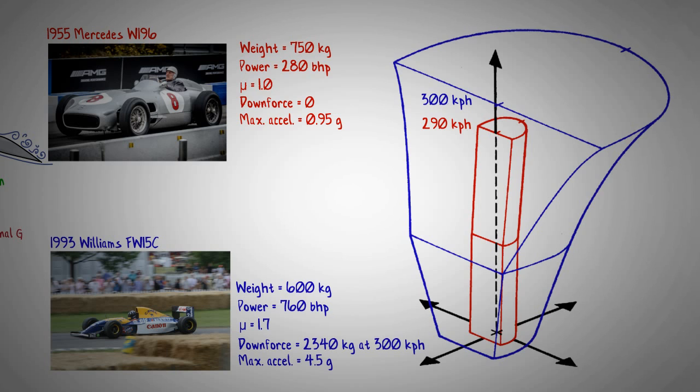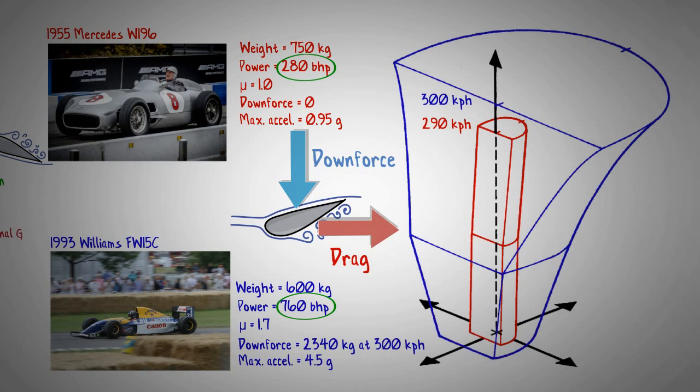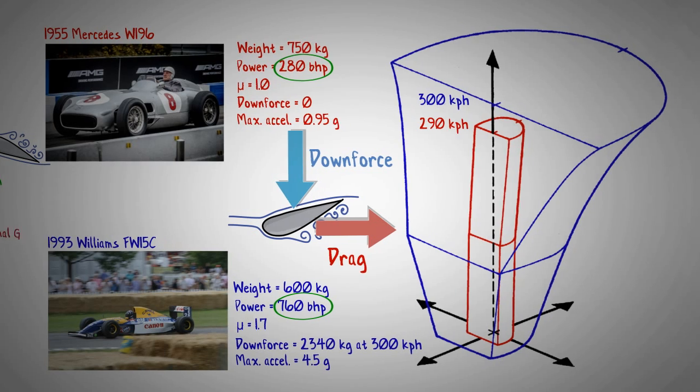However, the top speed is around 300 kilometers per hour, and that is because even though its engine is more powerful, downforce also brings additional induced aerodynamic drag which resists the forward motion of the car.